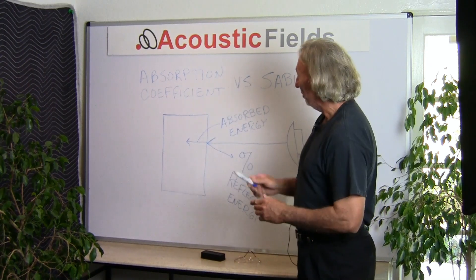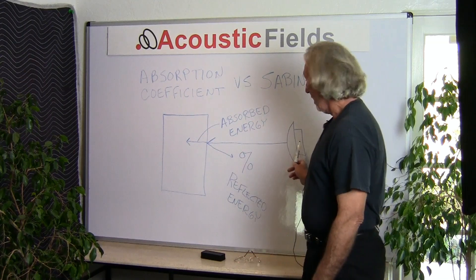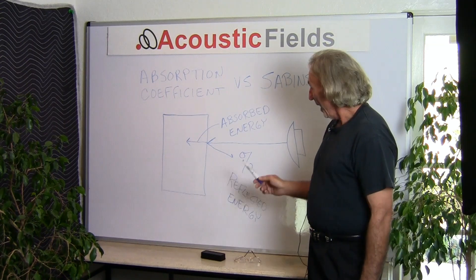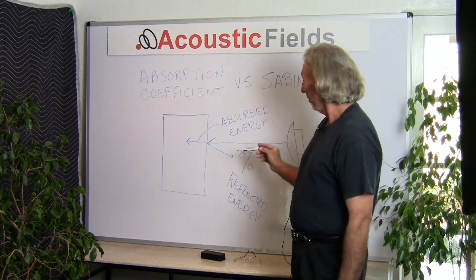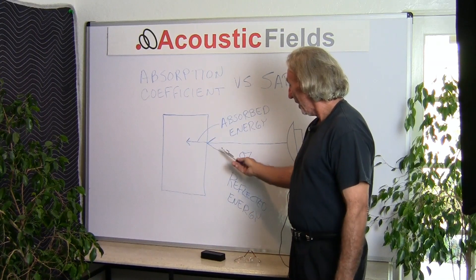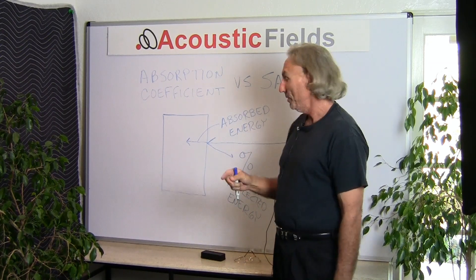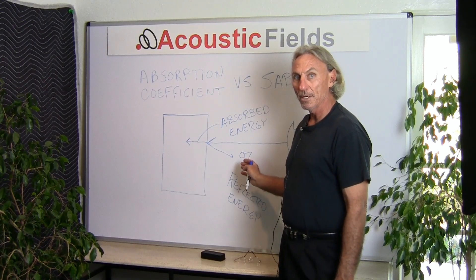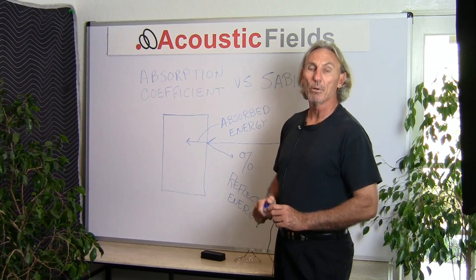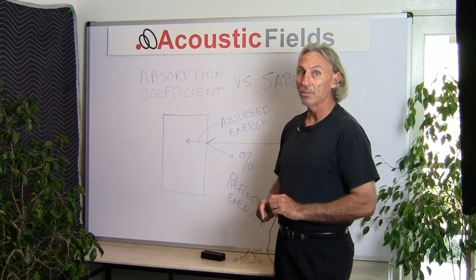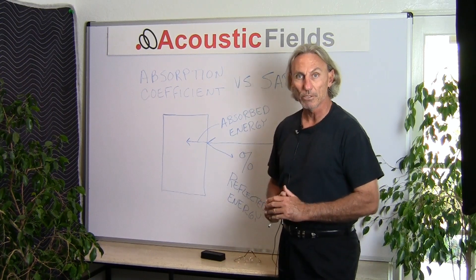Let's deal with absorption coefficient. To determine the absorption coefficient of a product, which is always expressed in percentages, you take a sample size and inject energy against it from a speaker. Part of that energy goes into the technology or the sample size being tested, and part of it is reflected back. So we have absorption into the product and a percentage of energy reflected back. That absorption coefficient, expressed as a percentage, is a ratio of absorbed versus reflected. So if it's a 66% absorption coefficient, then 66% is absorbed and 40% is reflected.